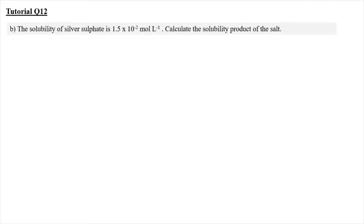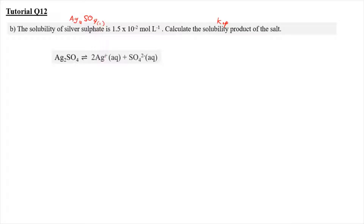For tutorial question 12, the solubility of silver sulfate, Ag₂SO₄, is 1.5×10⁻² mol/L, and we need to calculate the solubility product Ksp. For Ag₂SO₄ solid, it dissociates to form Ag⁺ aqueous ions as well as the sulfate ion SO₄²⁻. Since we have 2Ag on the left-hand side, we put a coefficient of 2 to balance the equation.